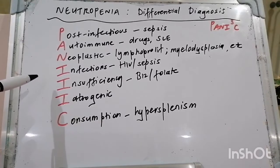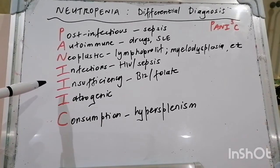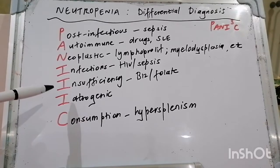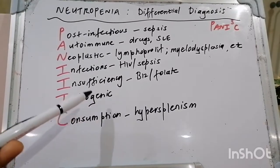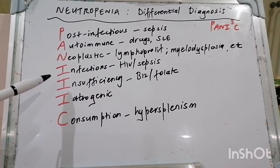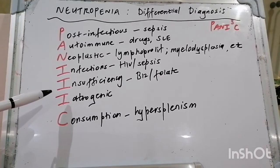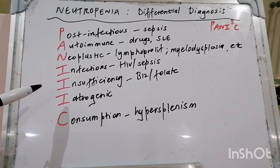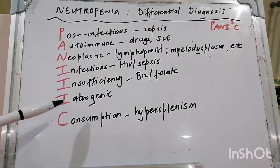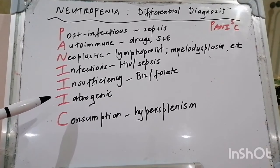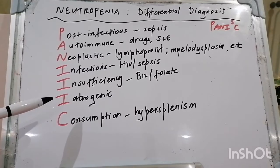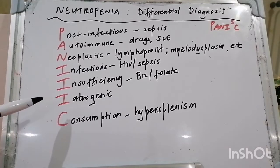Infections in the setting of HIV and sepsis are important causes. Insufficiency — meaning insufficient substrate to produce neutrophils — leads to neutropenia; examples include B12 and folate deficiency. Iatrogenic causes include drugs such as chemotherapy, chloramphenicol, and trimethoprim-sulfamethoxazole (Bactrim), which is our go-to for PCP pneumonia and also used to treat diarrhea in the immunocompromised to cover microsporidium and Isospora.